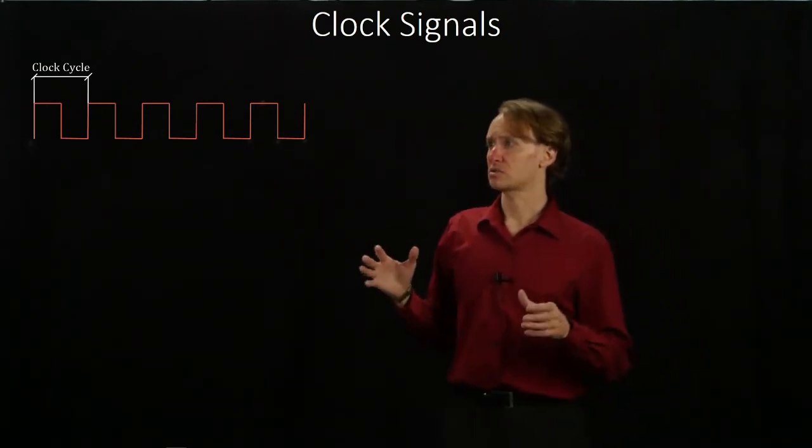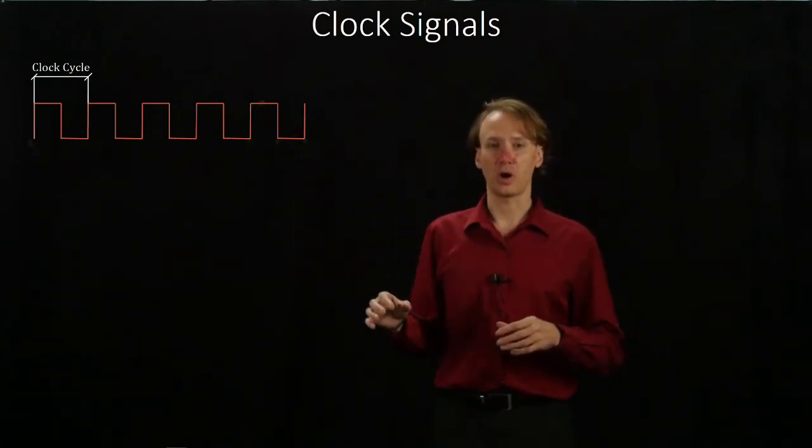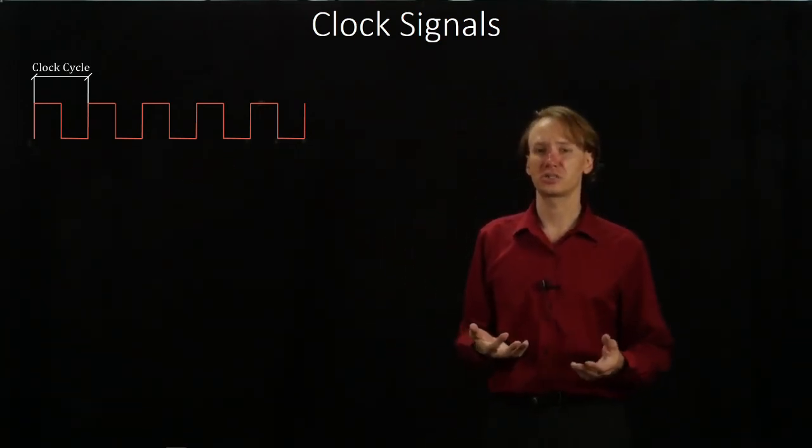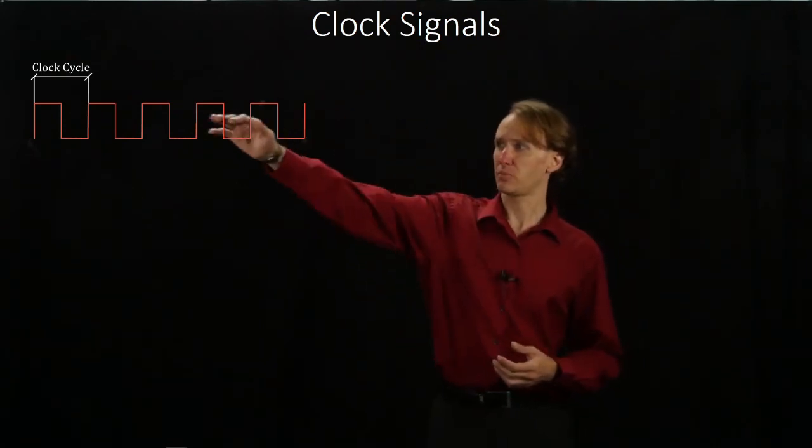So, overall, our clock signal is this nice, simple square wave that just repeats at a consistent frequency, has a nice separation between high and low, so we can use this to keep track of when we want to do certain things.